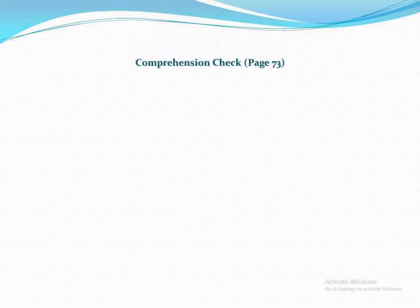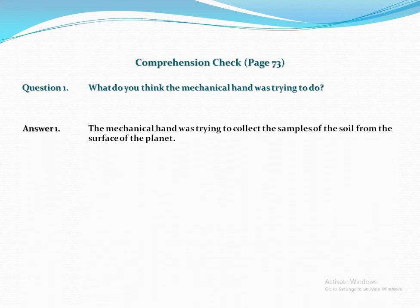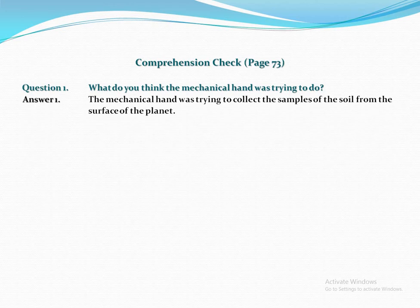Let's go to the last comprehension check, that is comprehension check number 3, written on page number 73. The first question is: What do you think the mechanical hand was trying to do? The answer is: The mechanical hand was trying to collect samples of the soil from the surface of the planet.